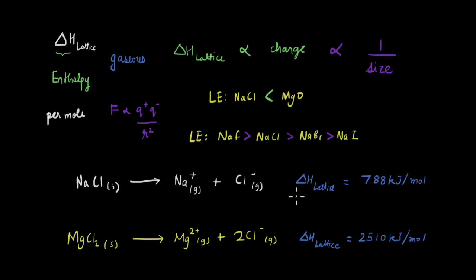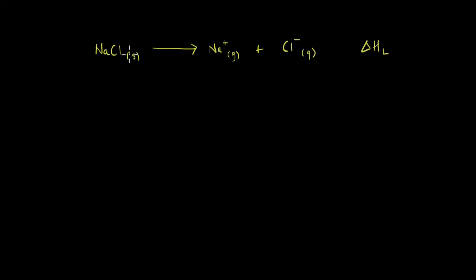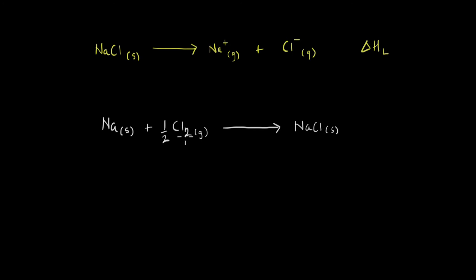Now let's see how lattice enthalpy is calculated using a Born-Haber cycle. We define lattice dissociation enthalpy as the enthalpy when NaCl dissociates to form sodium ions and chloride ions. To calculate this, we start with a known reaction for NaCl — its formation reaction — where solid sodium and chlorine gas react to give solid NaCl, and the enthalpy for this is the enthalpy of formation.